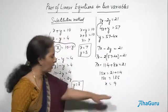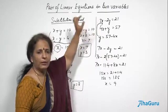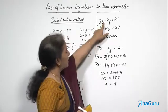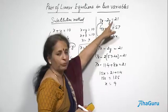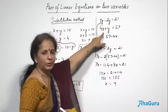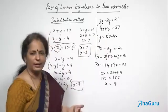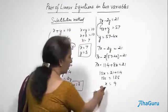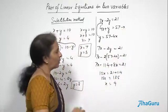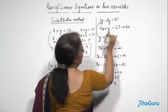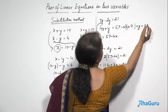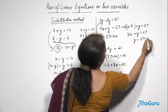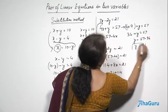So x equals 9. To find y, it is better to use the equation that requires less multiplication. Using 4x plus y equals 57, substituting x equals 9: 4 times 9 plus y equals 57, so 36 plus y equals 57, giving y equals 57 minus 36, which is 21.